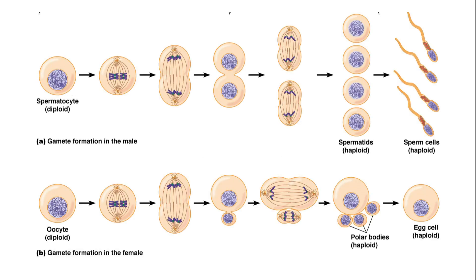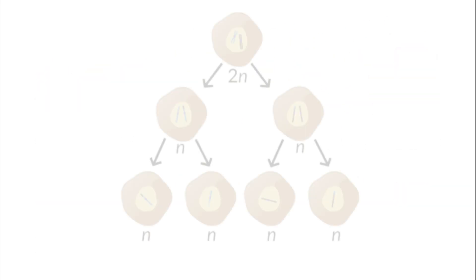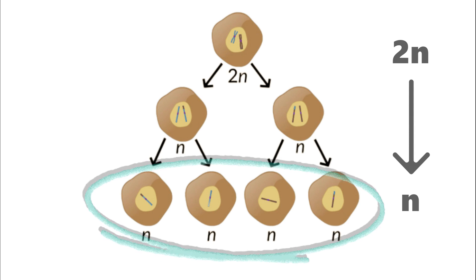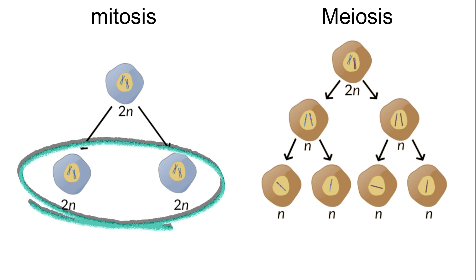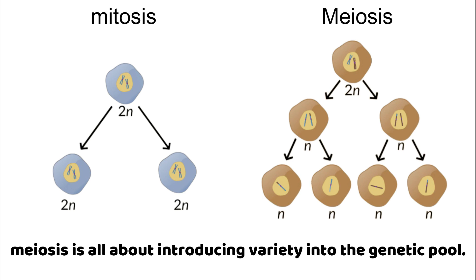What is meiosis? Meiosis is a specialized form of cell division that occurs in sexually reproducing organisms. Its primary purpose is to reduce chromosome number in half, which is crucial for the formation of gametes. Unlike mitosis, which creates identical daughter cells, meiosis is all about introducing variety into the genetic pool.